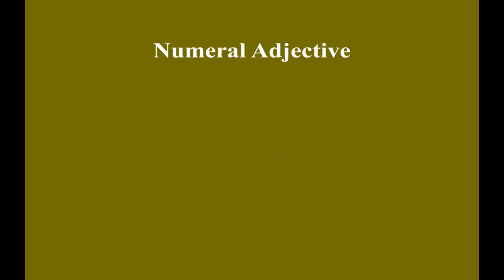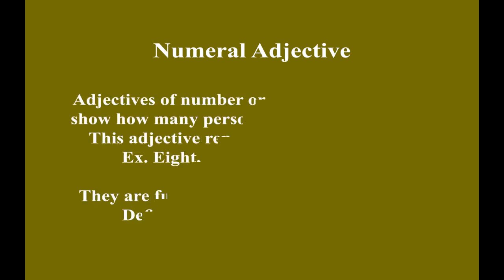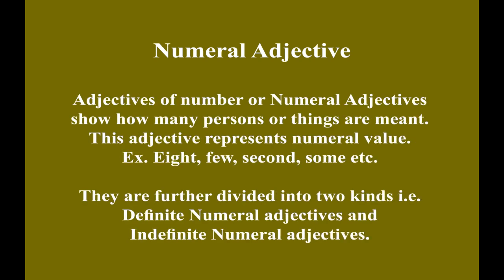Numeral adjective. Adjectives of number, or numeral adjectives, show how many persons or things are meant. This adjective represents numeral value. Examples: Eight, few, second, some, etc. They are further divided into two kinds: definite numeral adjectives and indefinite numeral adjectives.